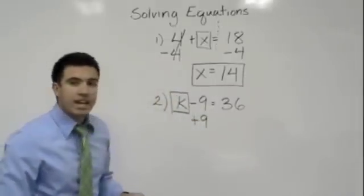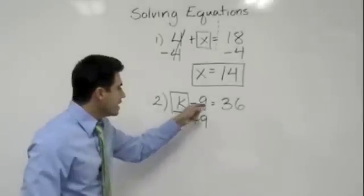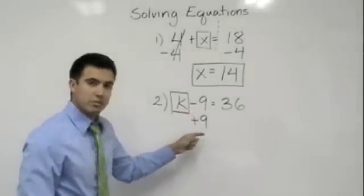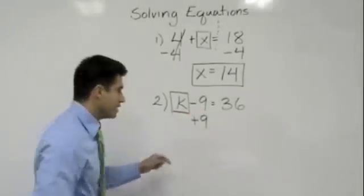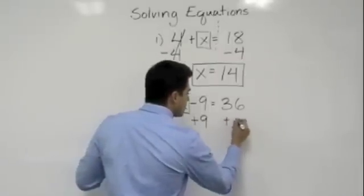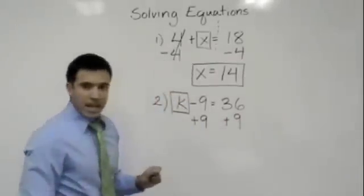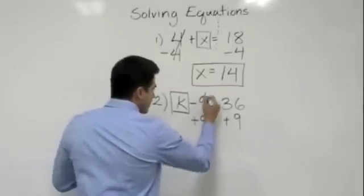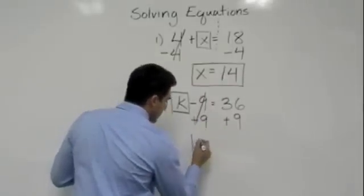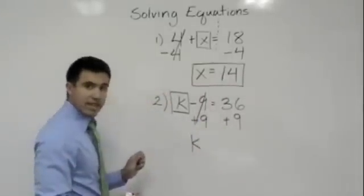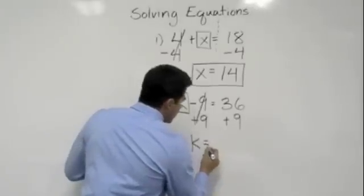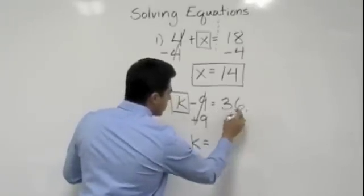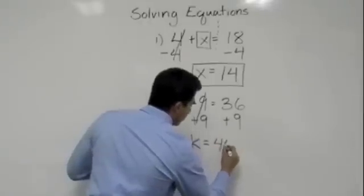Why did I add 9? Because, it's a negative 9, or it's a minus 9, so the opposite of that would be plus 9. So, what you do to one side, you have to do to the other. And, we'll go ahead and cancel that out. k will be brought down by itself now. And, that will equal 36 plus 9 is equal to 45.